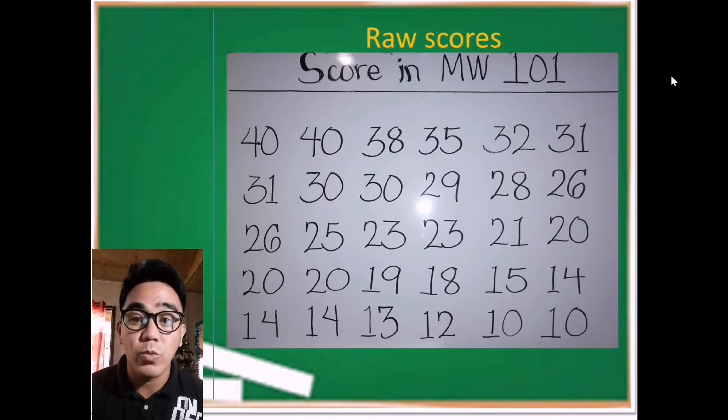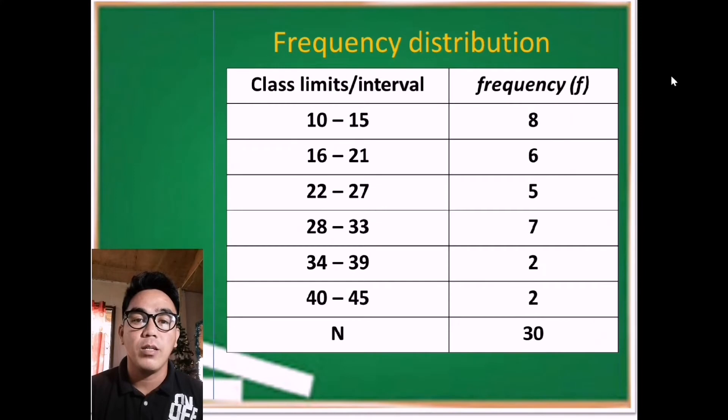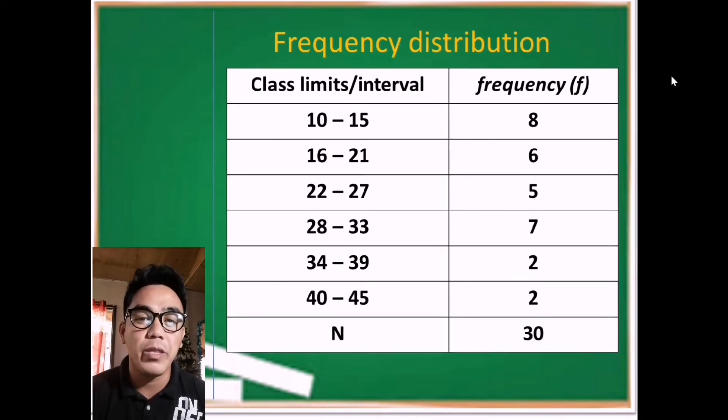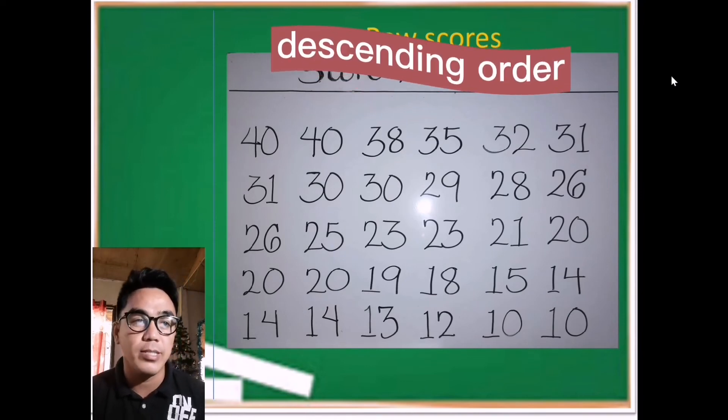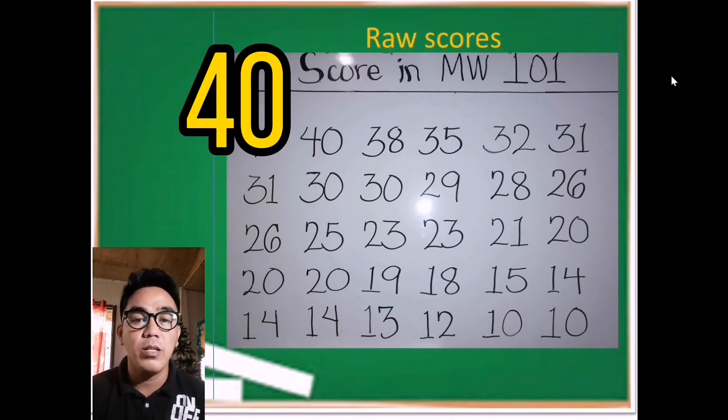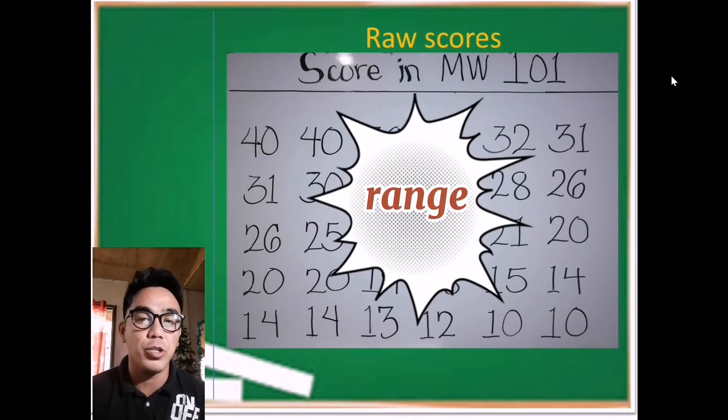So we're going to convert these raw scores into a two-column frequency distribution like this. Frequency distribution is divided into two parts: the class limits or class interval, and the other side is the frequency or small letter f. Let's go back to the raw scores. I already presented the raw score in descending order, with 40 as the highest value and 10 as the lowest value, which are essential numbers to determine the range later.